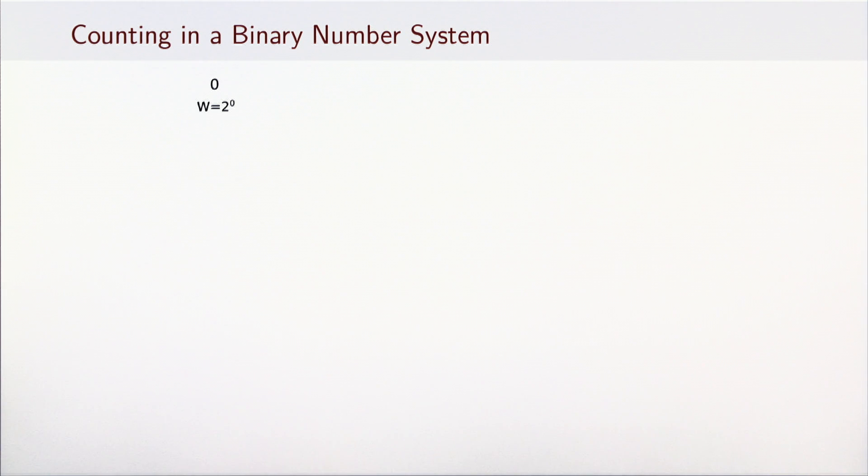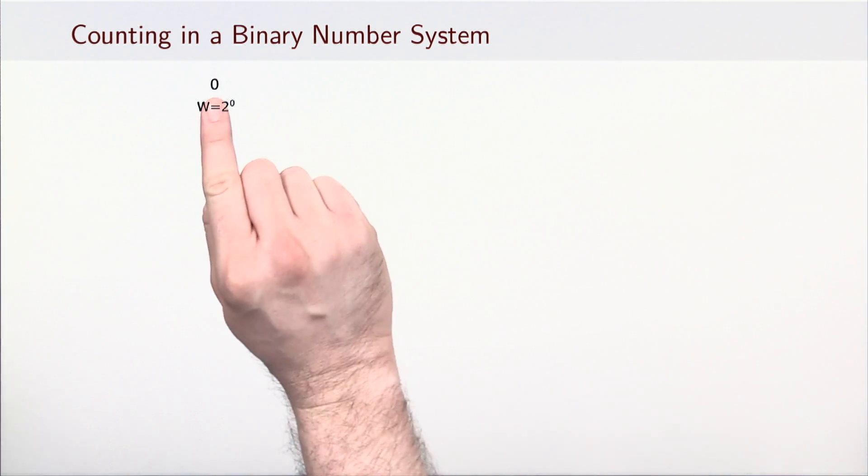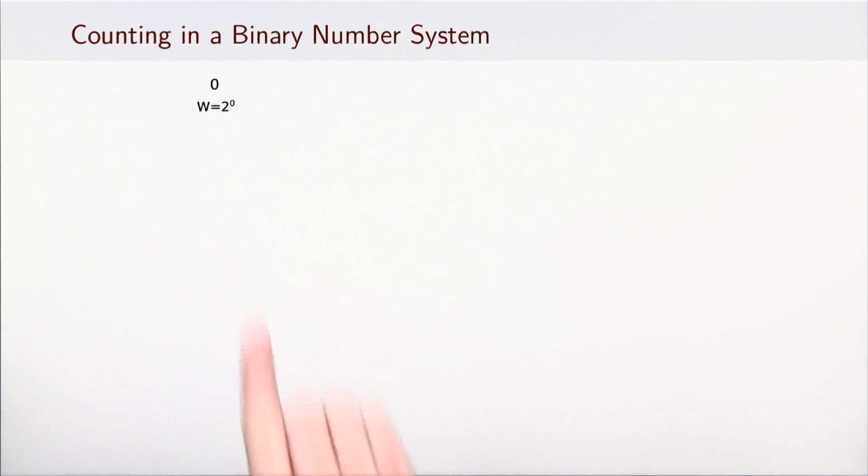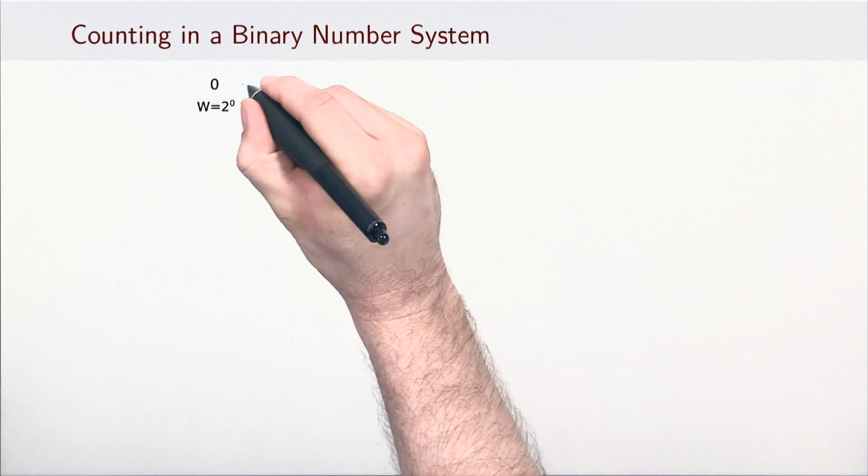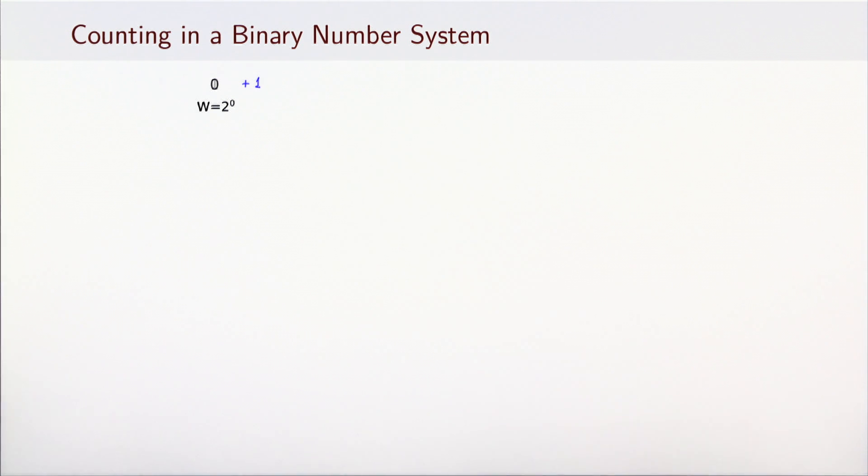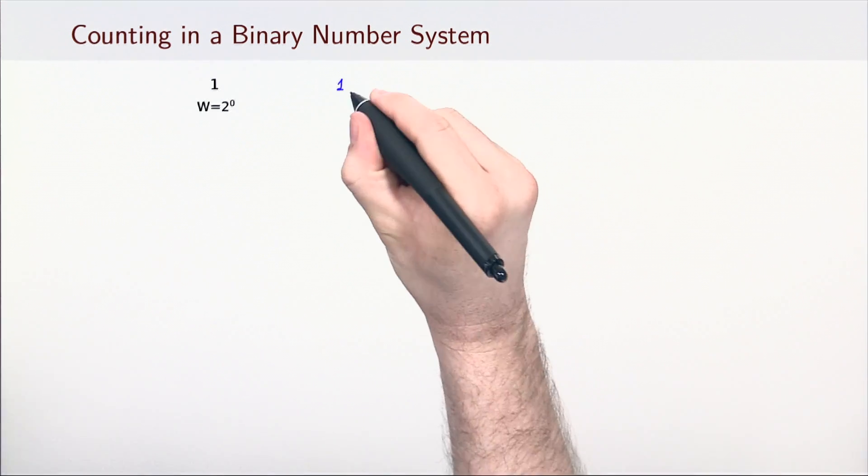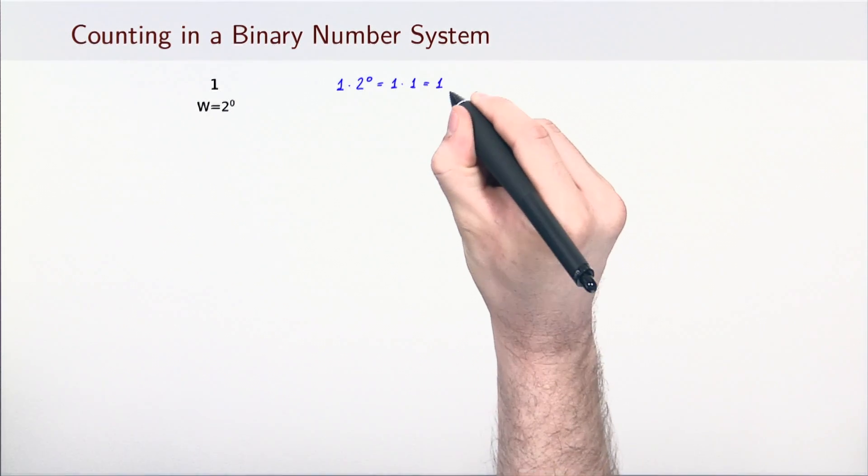How do we count in the standard positional binary number system? Let's see an example. We start with zero, which is represented with a single digit in the binary number system. This digit is at 0th position and has the weight 2 to the power of 0. Let's increment it by 1. If we add 1 to the 0 digit, it is incremented and becomes 1. To convert this number to the decimal system, we need to multiply the single digit 1 with its weight. We get the same representation 1 in the decimal number system.